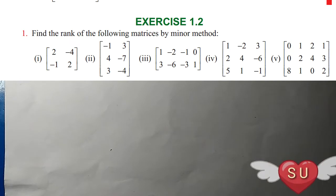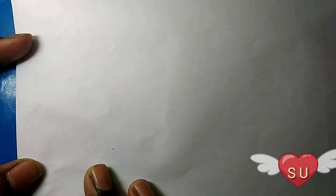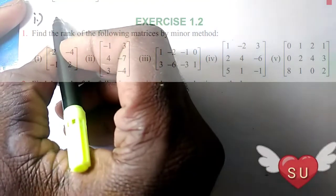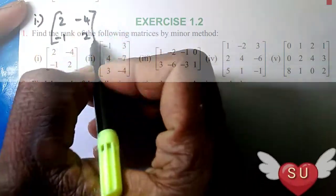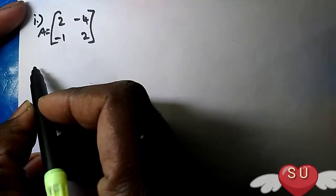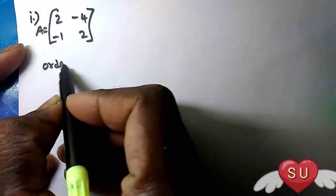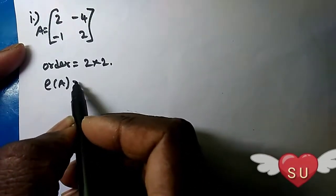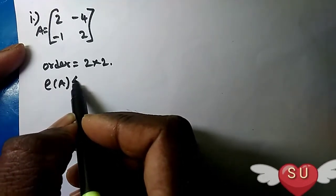I am going to show you how to find the rank of a matrix by Minor Methods. Therefore, the rank of the matrix by Minor Methods is 2 or less than.